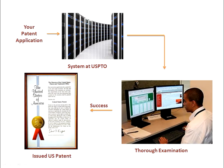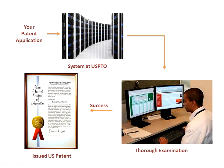Your complete non-provisional patent application gets filed in the United States Patent and Trademark Office. After some period of time, a search is done and your application is thoroughly examined to determine if your claimed invention is patentable over what was in the public domain at the time of your filing.